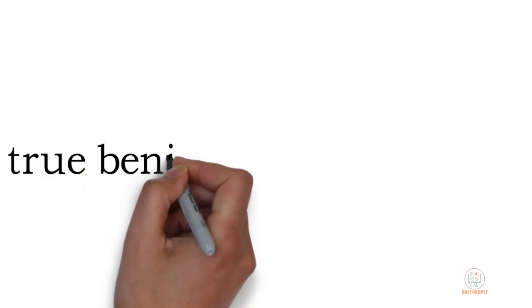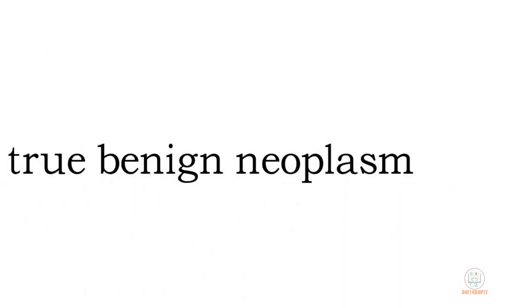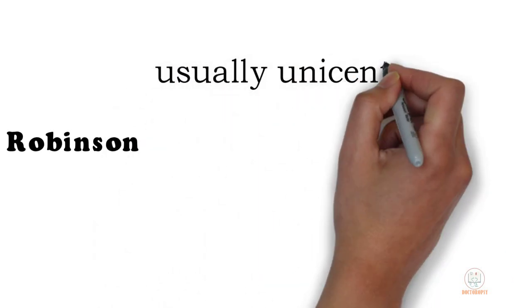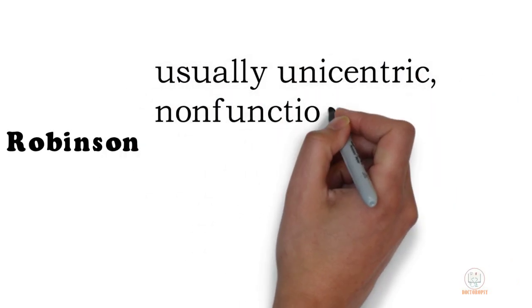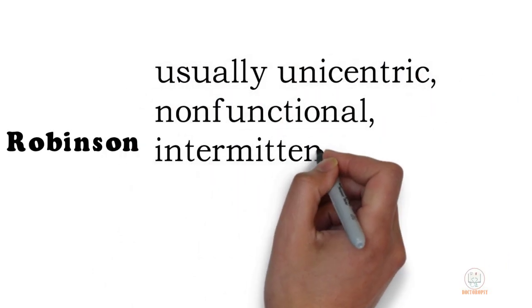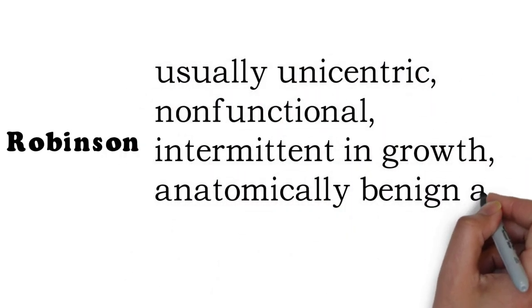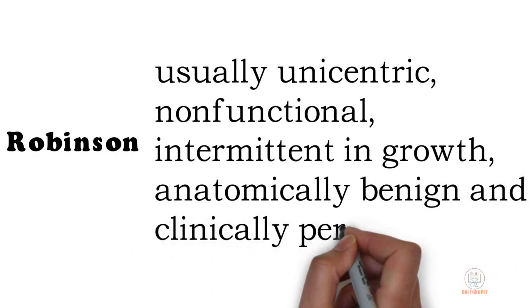Ameloblastoma is considered as the true benign neoplasm of the enamel organ. It has been described by Robinson as a tumor that is usually unicentric, non-functional, intermittent in growth, anatomically benign and clinically persistent.